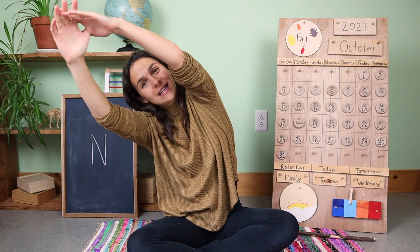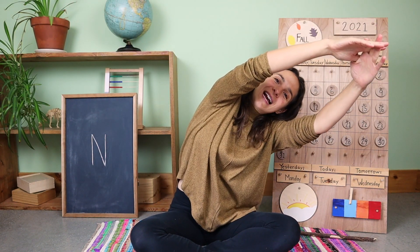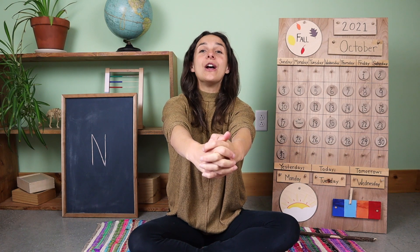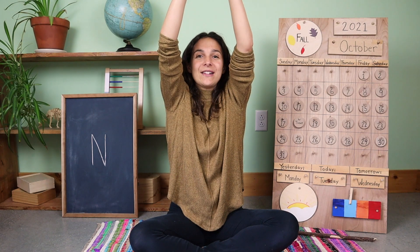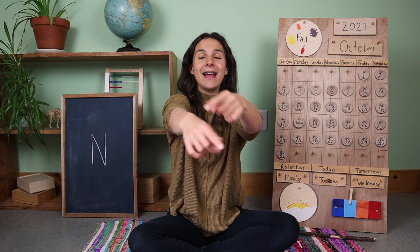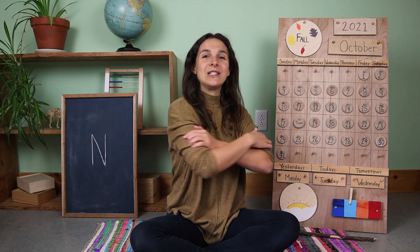Now take the circle up over your head and we'll stretch on this side, over to the other side, one last stretch up at the top and bring the circle back down and let's sing. Good morning, dear earth. Good morning, dear sun. Good morning, dear rocks and flowers, everyone. Good morning, dear beasts and birds in the trees. Good morning to you and good morning to me.